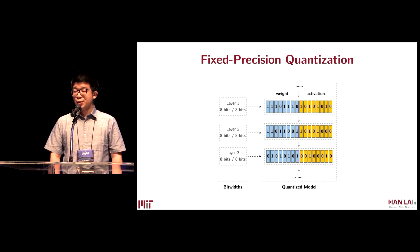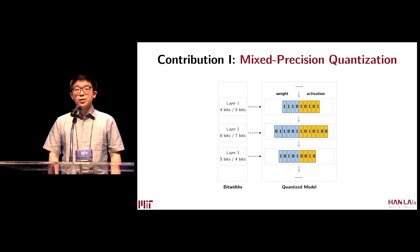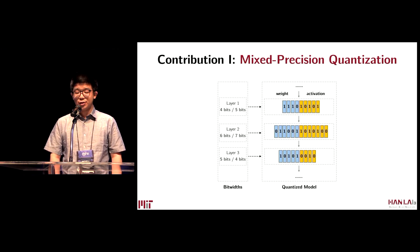That is to use the same number of bits for all layers. For example, as shown in the figure, assigning eight bits to both weights and activations. A natural question is whether it is optimal to assign the same number of bits to each layer. The answer is obviously no. We propose to use mixed precision quantization to provide more flexibility — for example, assigning four bits to the weights and five bits to the activations in the first layer, and six bits to the weights and seven bits to the activations in the second layer.